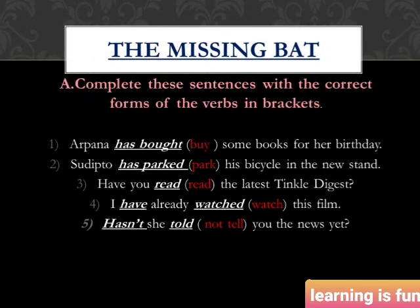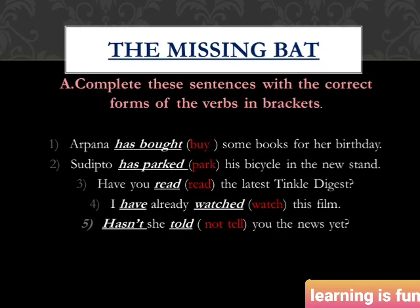We have a textual exercise on page 5 of Canopy for the lesson 'The Missing Bat.' It says to complete these sentences with the correct form of the verbs in brackets. The first sentence: 'Aparna has ______ some books for her birthday' — the verb 'buy' changes to 'has bought.' The second sentence: 'Dip has ______ his bicycle in the new stand' — 'park' changes to 'has parked.' The third sentence: 'Have you ______ the latest Tinkle Digest?' — 'read' changes to 'read' (same spelling, different pronunciation).